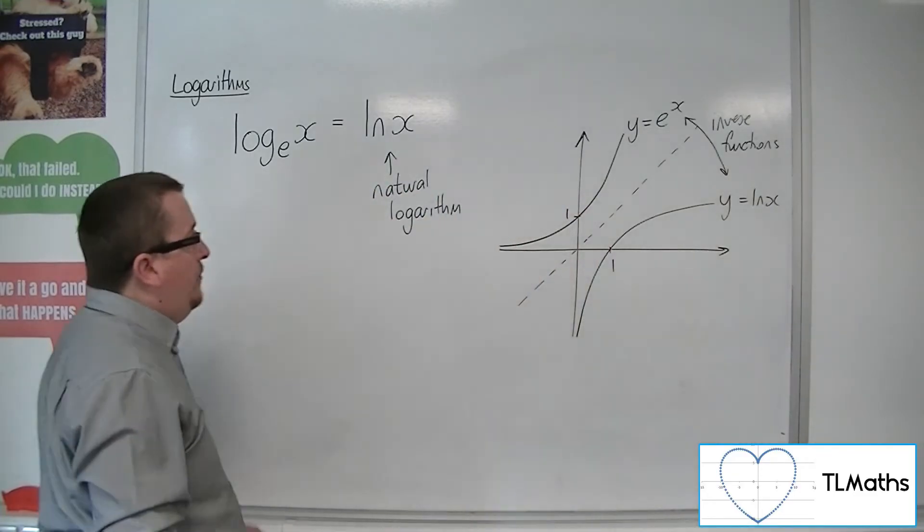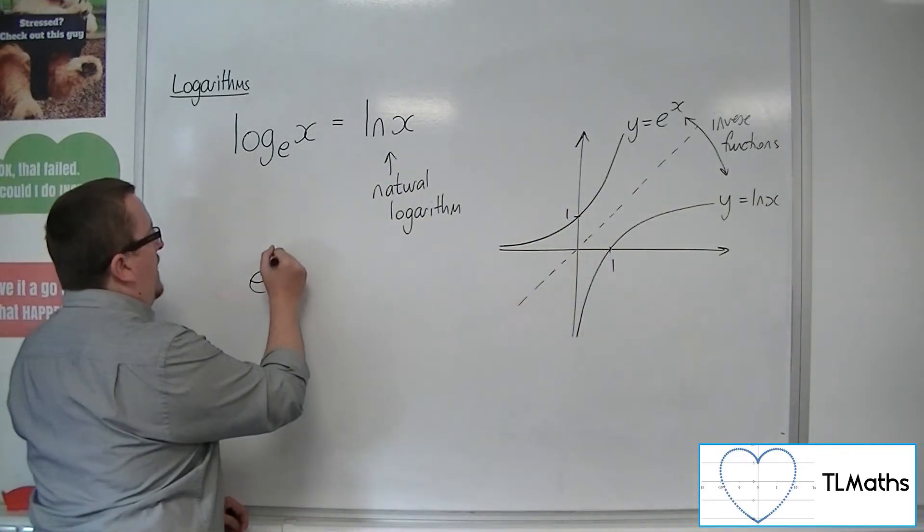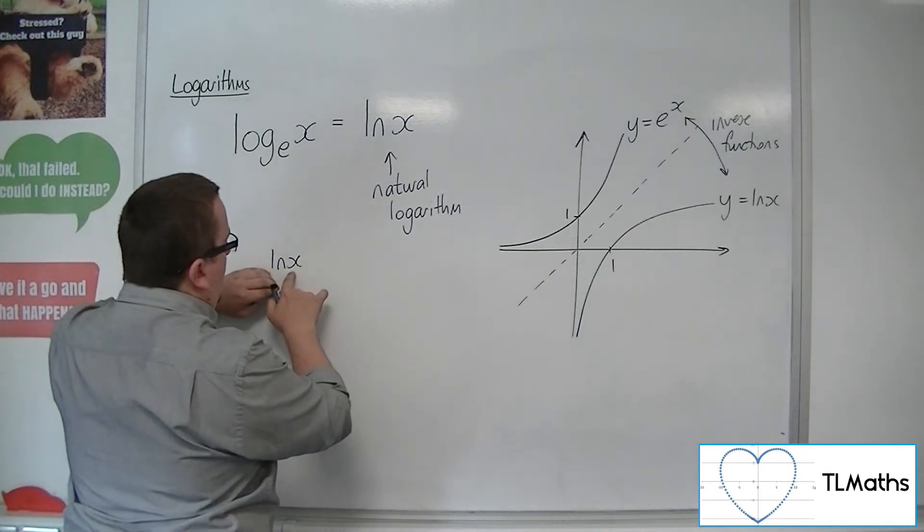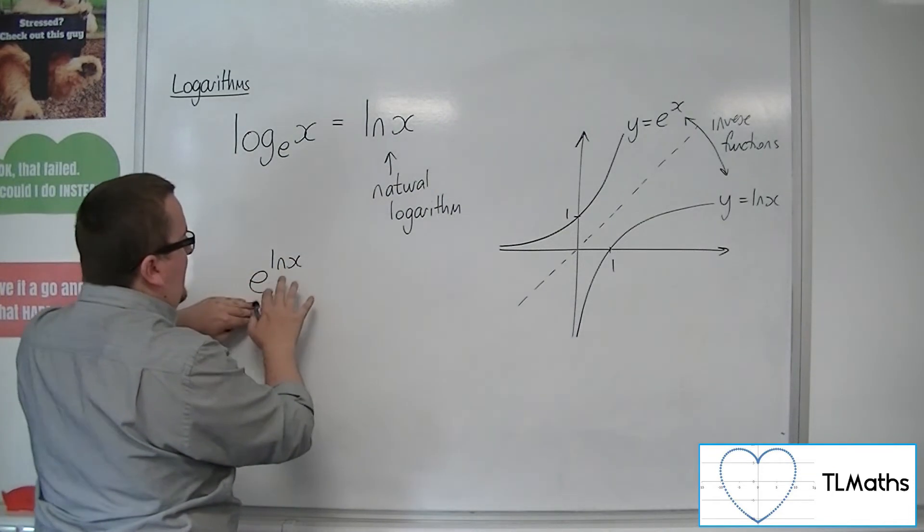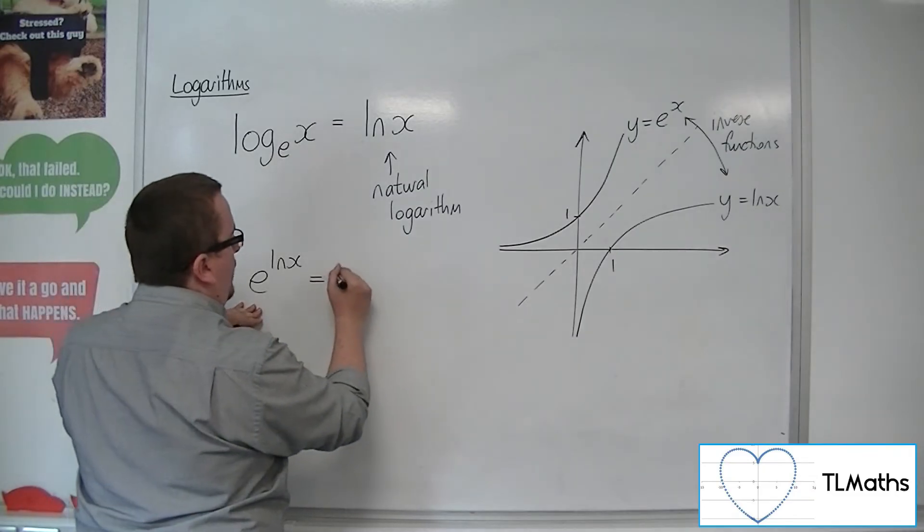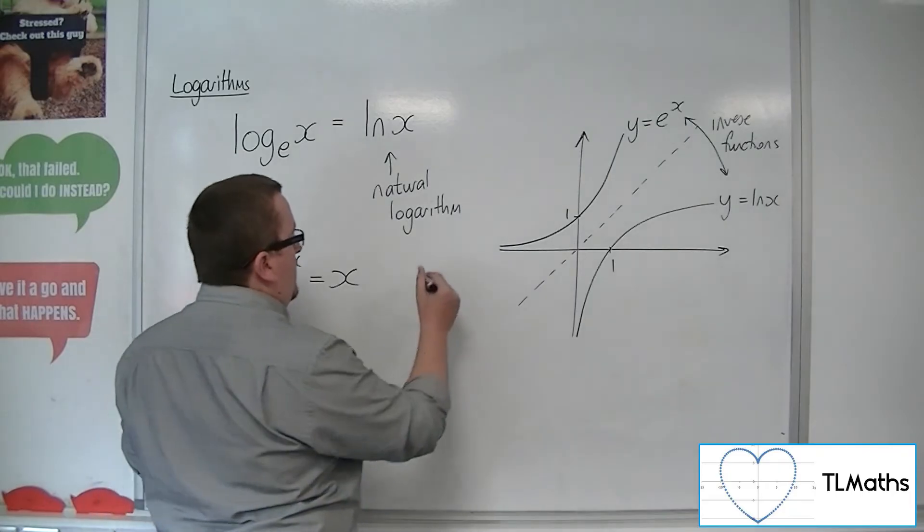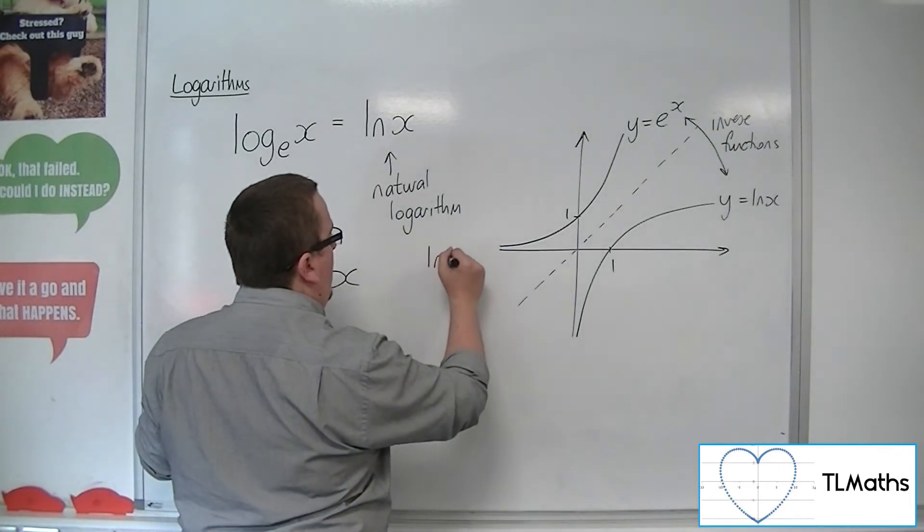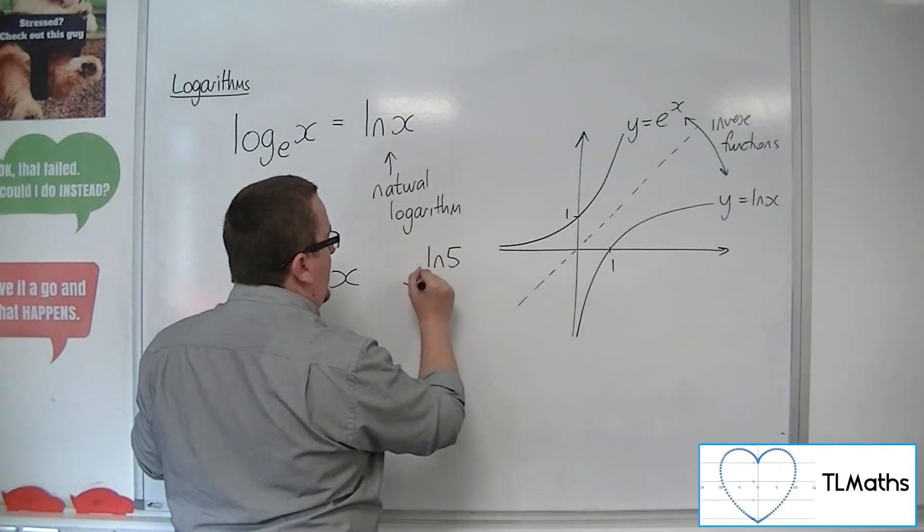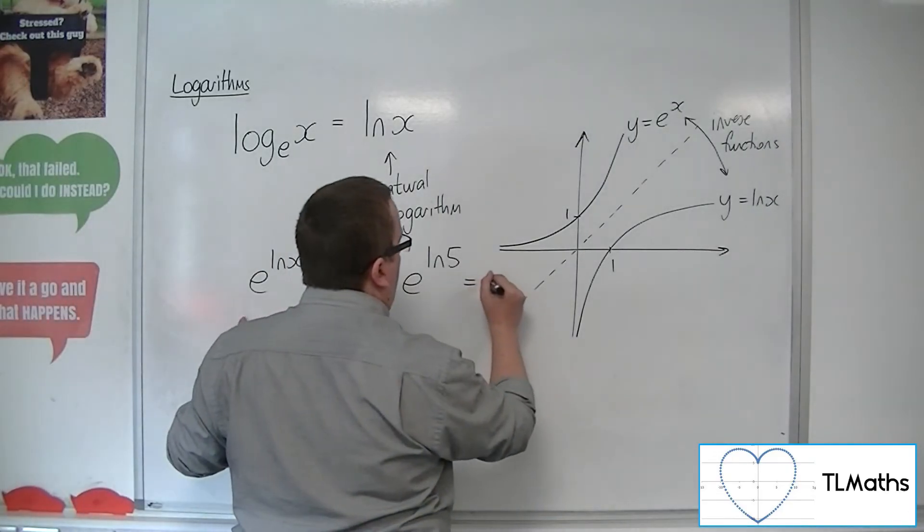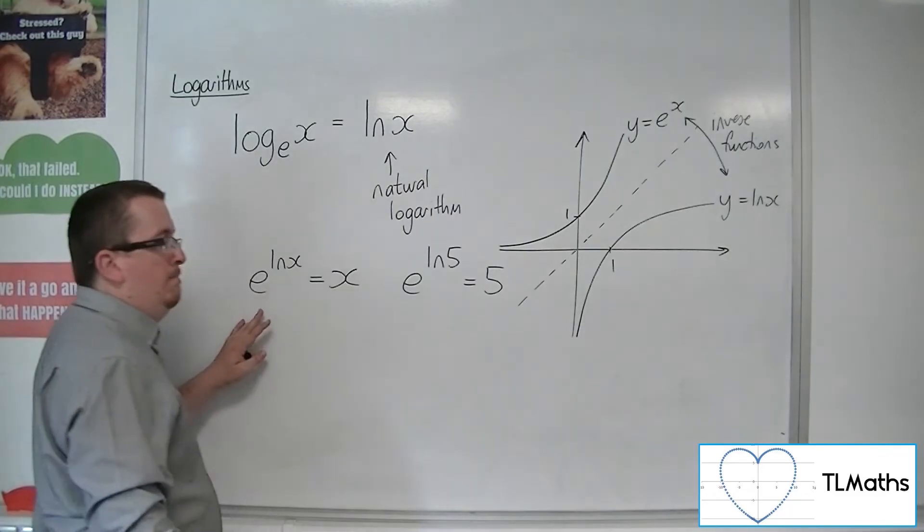Now, what that means is that e to the ln of x - so if you have ln of x and you look at e to the ln of x, this will just be x. So if you typed in to your calculator ln of 5 and then you did e to that number, so e to the ln of 5, you would get 5.